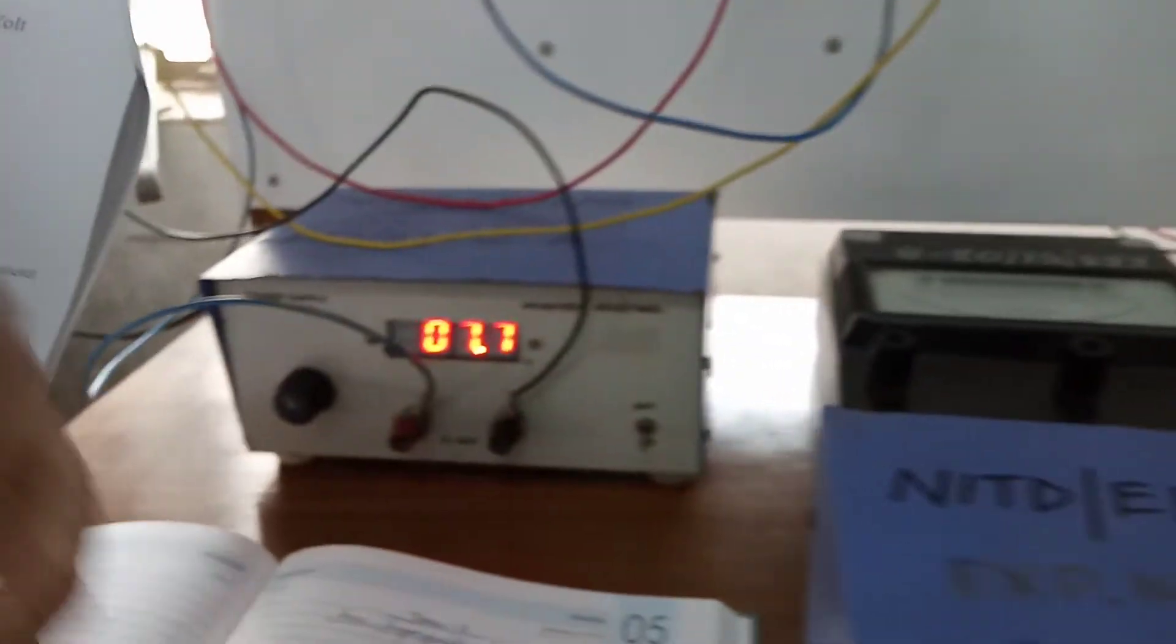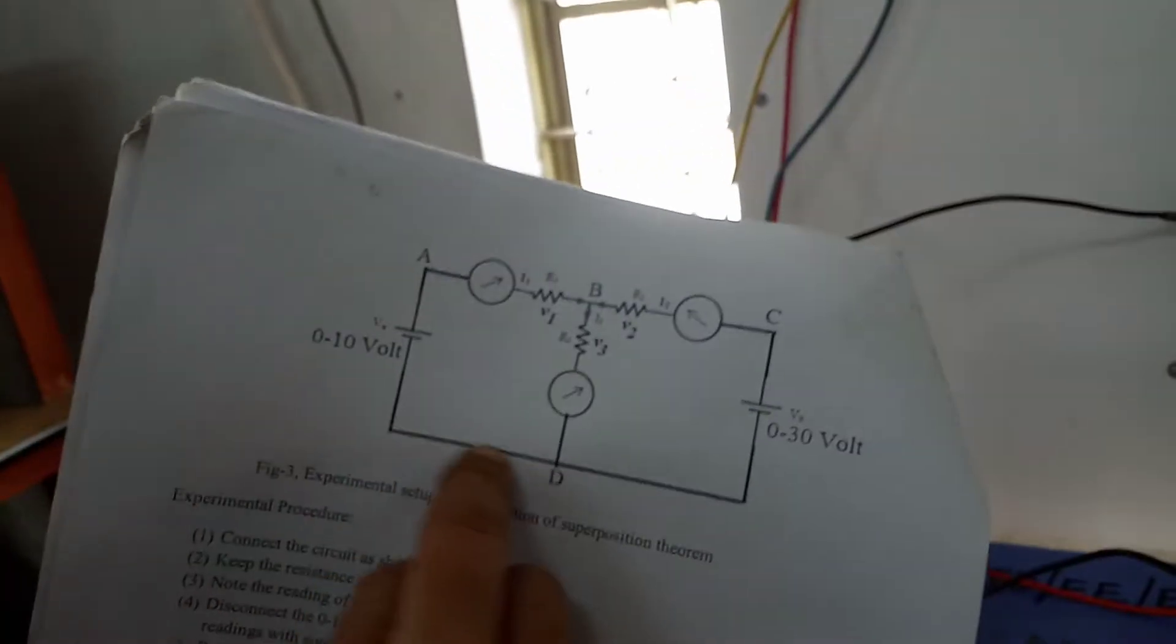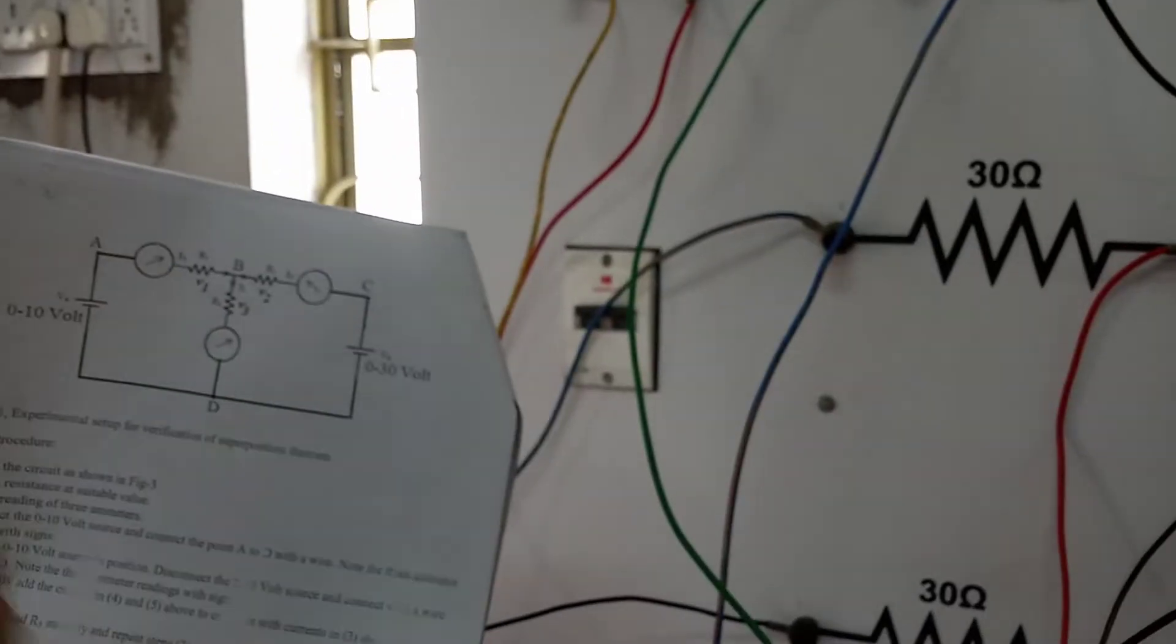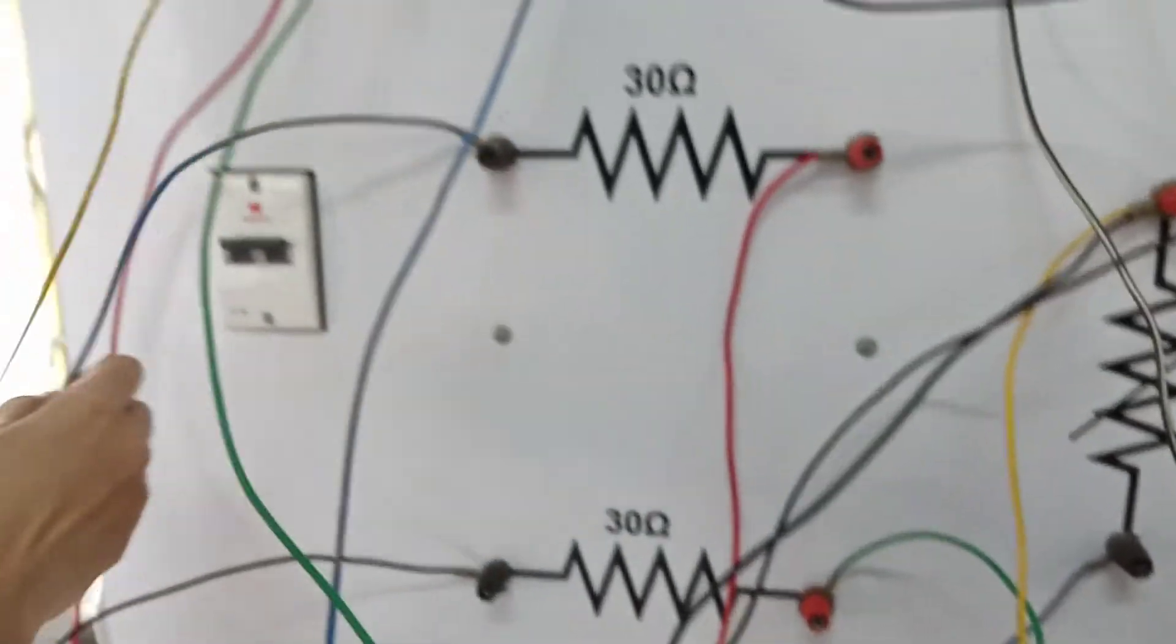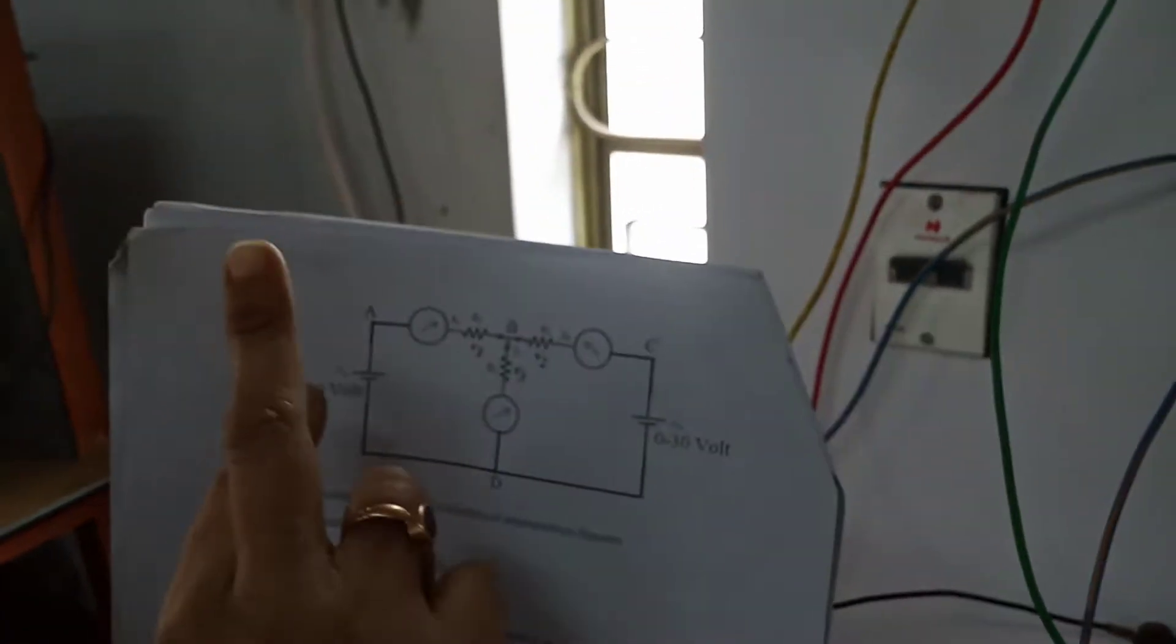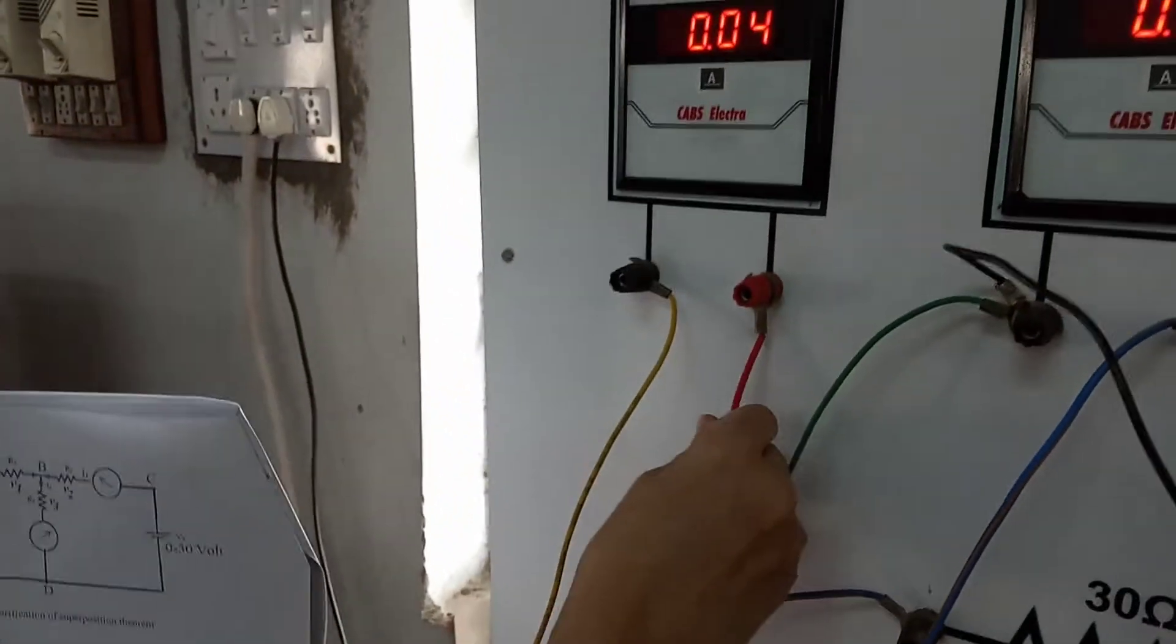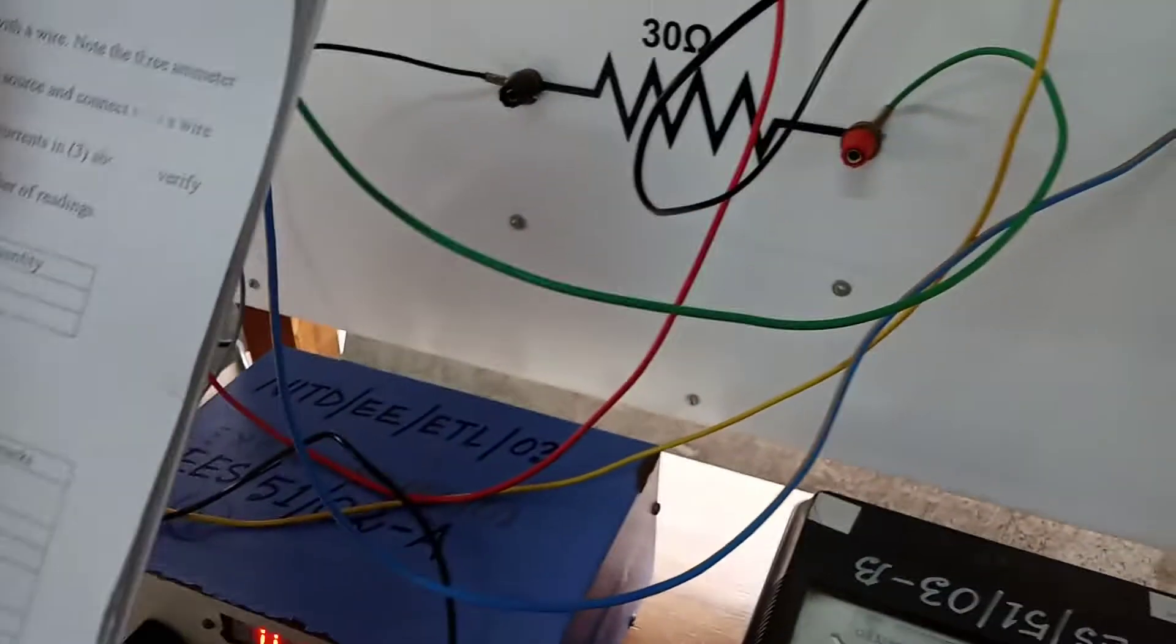Now coming to the connection. The A point is coming here, so we are giving the sources across these two terminals. Next is the ammeter and resistance in series. Since these two are in series, we can interchange the position, so first we keep the resistance then the ammeter. From the other terminal of the ammeter, it is going to the next branch, the B point.